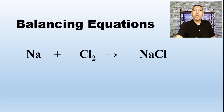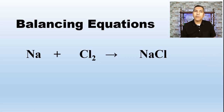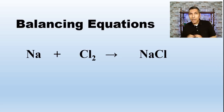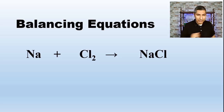The law of conservation of mass tells us that we cannot create or destroy any mass — we cannot create or destroy any atoms in any chemical process. So there's something wrong with the way we have this equation written. What we're going to have to do is balance this chemical equation, making sure that we have the same number of chlorine atoms on the left side as on the right side, and the same for sodium.